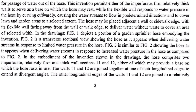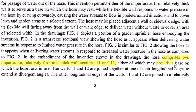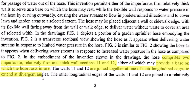We go to figure 1, figure 2, and figure 3 to find the information we are looking for. It says the hose comprises two imperforate, relatively firm and thick wall sections 11 and 12 — this is our wall 1 and wall 2 — and they are configured to provide a base on which the hose may rest when in use. They are joined together at one of their longitudinal edges to extend at divergent angles. So far we have: garden sprinkler hose comprising a first wall, a second wall, wherein the first wall and second wall are joined together at one of their longitudinal edges to extend at divergent angles.